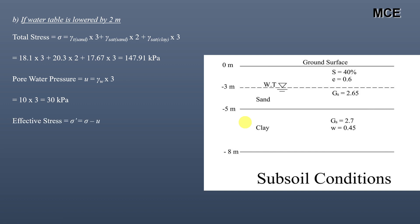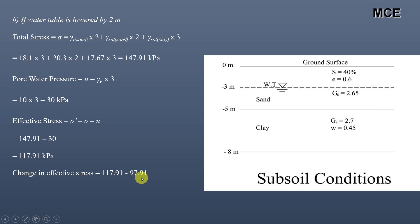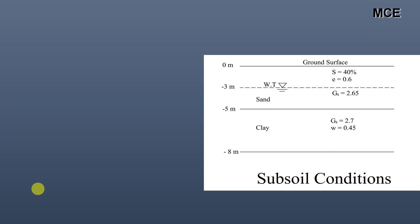Effective stress = 147.91 − 30 = 117.91 kPa. This is greater than the initial condition. Change in effective stress = 117.91 − 97.91 = 20 kPa. Remember: when you lower the water table, the effective stress increases.